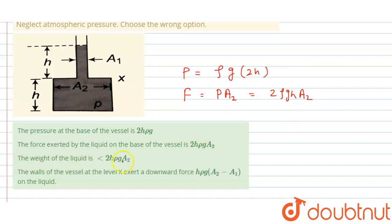Third option: the weight of the liquid is less than 2ρgh into A2. So weight of the liquid, in this case 2ρgh into A2, if this complete portion is filled by liquid, then total volume of liquid will be A2 into 2h. Total volume A2 into 2h into density into g is called total weight. But in this case, weight of the liquid is: